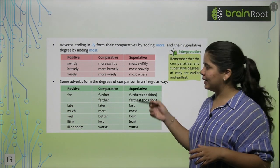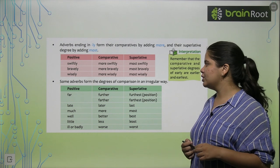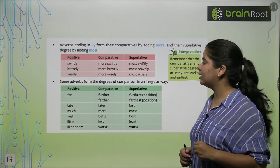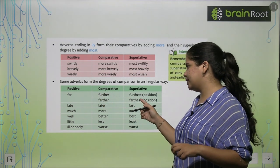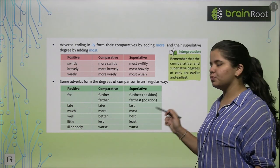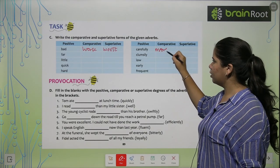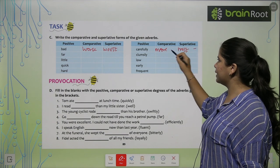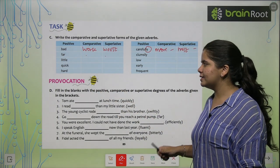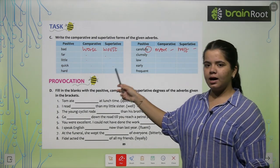Some adverbs form degrees of comparison in an irregular way — you have to memorize these. Far, further/farther, furthest. Late, later, last. Much, more, most. Well, better, best. Little, less, least. Quick, quicker, quickest. Hard, harder, hardest. For 'carefully,' most is added because it ends in -ly.